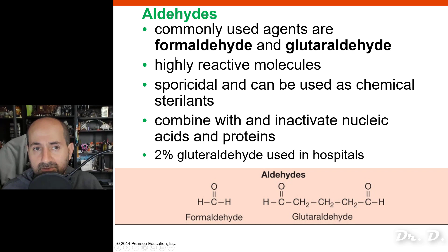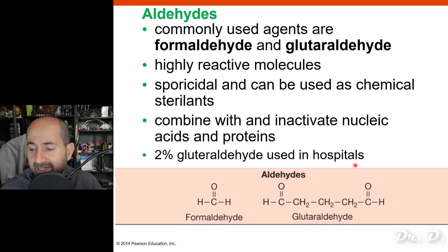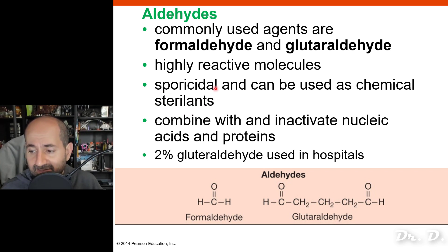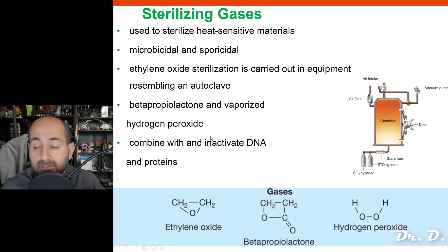Aldehydes include formaldehyde and glutaraldehyde. Two percent glutaraldehyde is used in hospital settings. Formaldehyde and glutaraldehyde react with molecules — they can cross-link molecules to one another — and that results in sterilization. They can destroy spores and vegetative cells, making them very potent sterilants used in hospital settings.